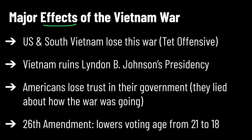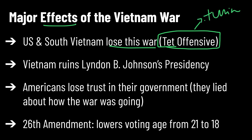First, we lose this war. This is not a victory for the United States or South Vietnam — North Vietnam wins. The Tet Offensive is a vocab word that connects to why we lose. It's sort of the turning point: North Vietnam basically pushes into South Vietnam, hits a lot of cities, firebombs lots of places, and shows they're able to attack and hold that area. That's the point where we realize we are not winning.